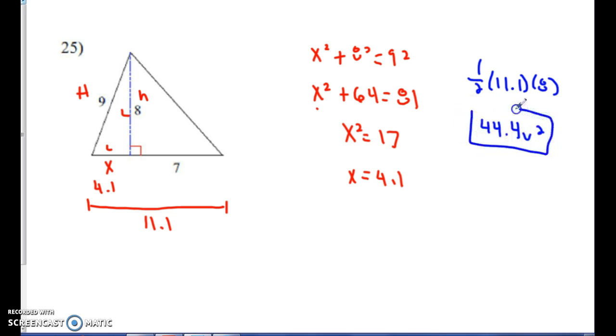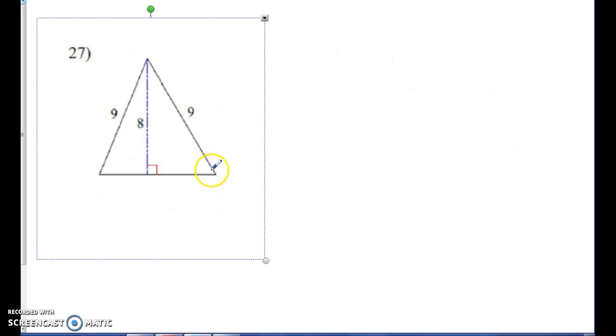You guys are going to do 26 in a second. What I want to do is jump to number 27 with you guys. In this case, I don't know anything about my base. I'm going to call this x and that y. So I've got to find what my base is right here. I'm going to use the Pythagorean theorem again. This is my hypotenuse, this is my leg, and this is my leg.